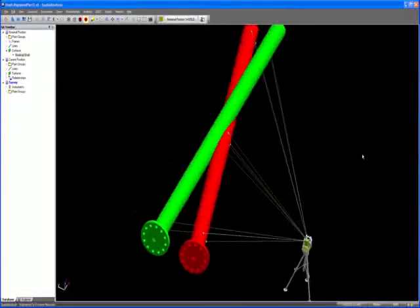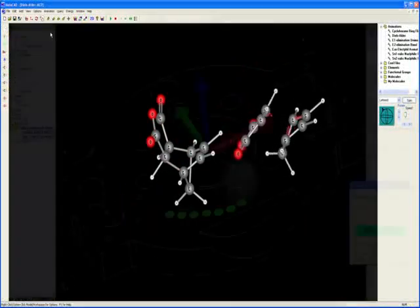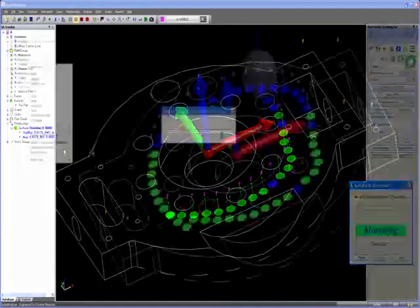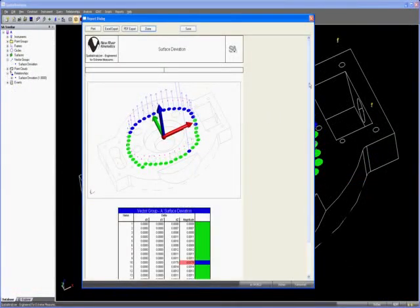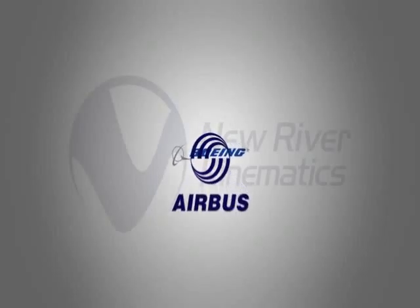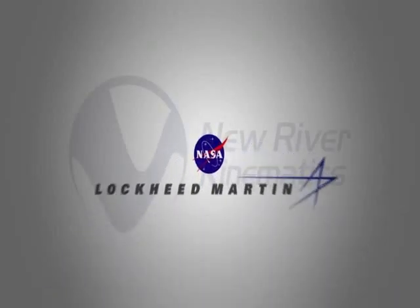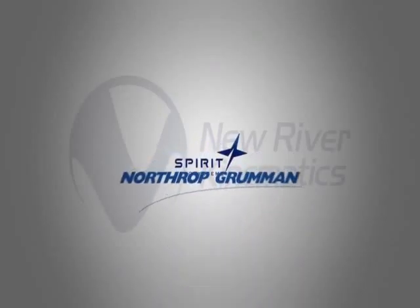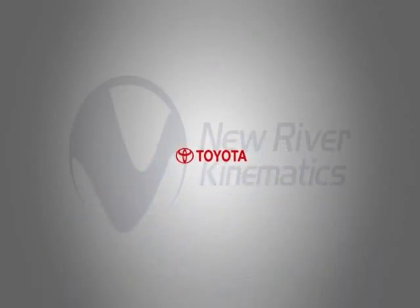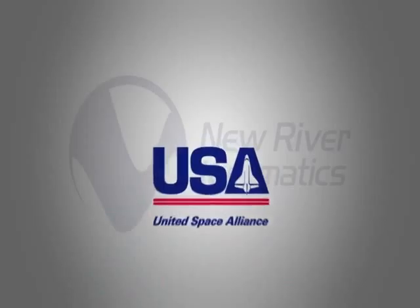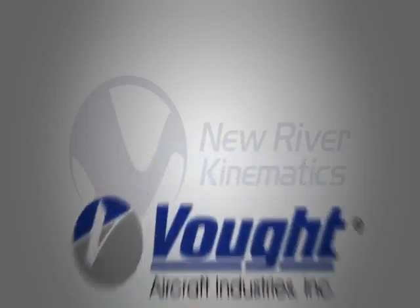From Spatial Analyzer to custom applications, NRK software is architected from the ground up as a total engineering solution. That's why companies like Airbus, Boeing, General Dynamics, Honda, Lockheed Martin, NASA, Northrop Grumman, Spirit Aerosystems, Toyota, United Space Alliance, and Vought Aircraft rely on us to get the job done.